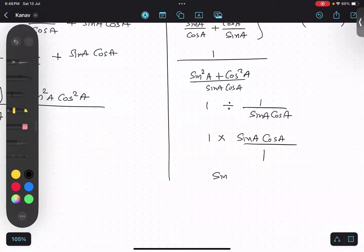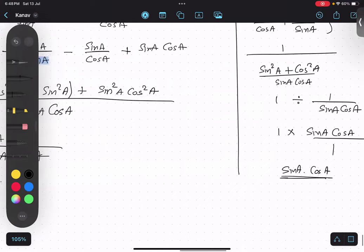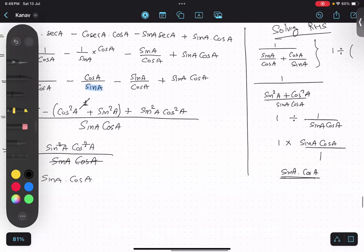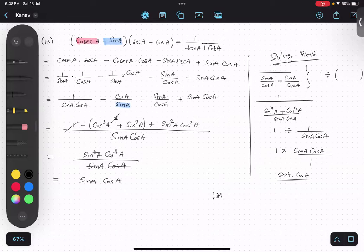Sin A cos A upon one, so answer is sin A cos A. So this is it. LHS equals to RHS. So quickly take a screenshot. Done, done.